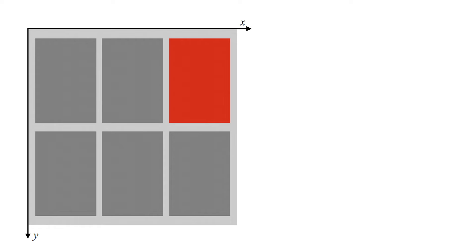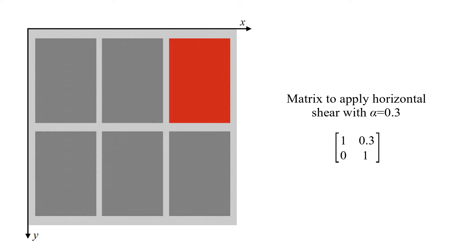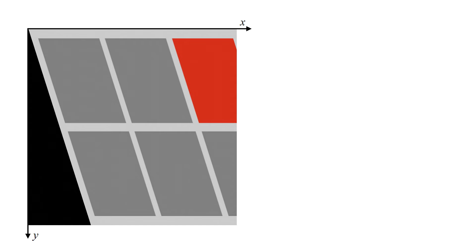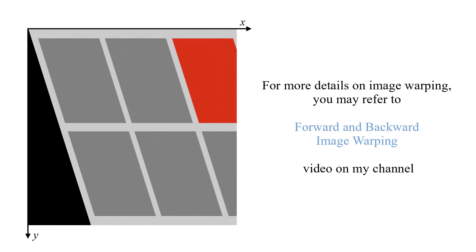This is our input image, and this is the matrix to apply horizontal shear with alpha equal to 0.3. The transformed image is obtained with backward warping. For more details on image warping, you may refer to the forward and backward image warping video on my channel.